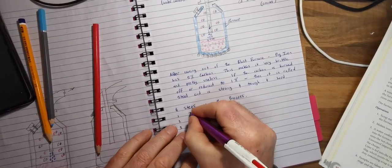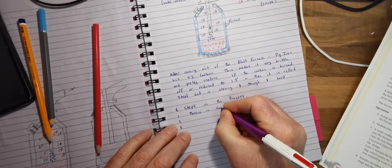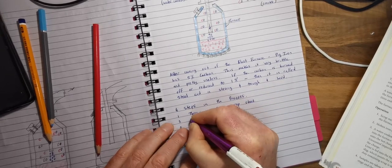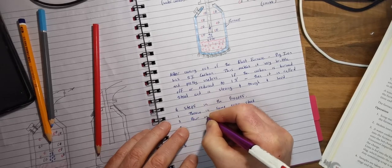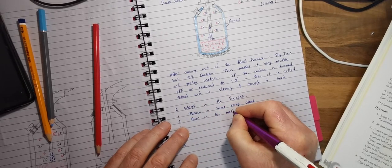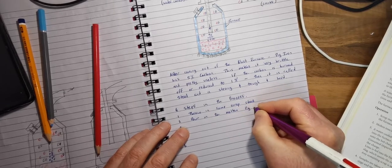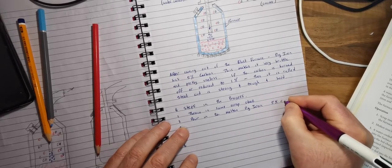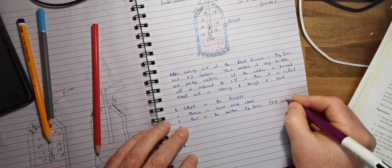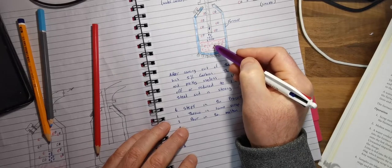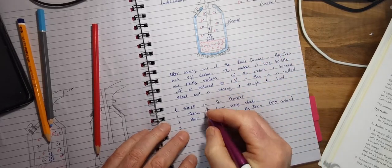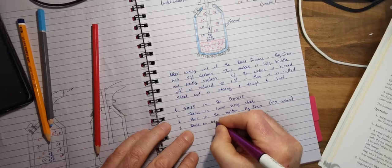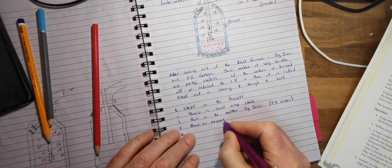Step one is throw in some scrap. Step two, pour in the molten, which is melted pig iron. Now this has five percent carbon, so that is the problem. When you throw in the molten pig iron here, it's got five percent carbon. Step three is blow on the oxygen. Now this does two really important things.